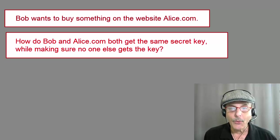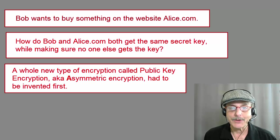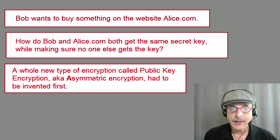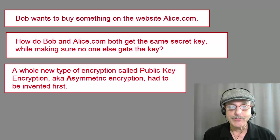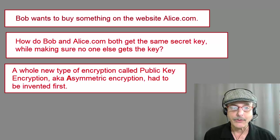The answer is that no one has ever thought of a very efficient way to do this. A whole new type of encryption, called public key encryption, also called asymmetric encryption, had to be invented first. The fact is, it was invented in the 1970s, thousands of years after mankind first started using cryptography.